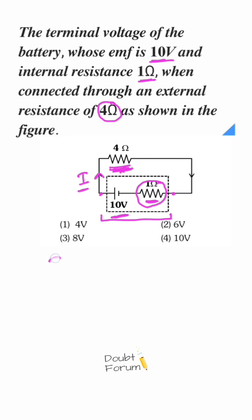and its value, I, would be V upon R. V is 10 volt, and R is the total resistance of the circuit, that is 4 ohm plus 1 ohm, because these two are connected in series, so this would be 4 plus 1, that is 5 ohm. So the current would come out to be 2 ampere,